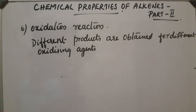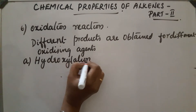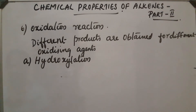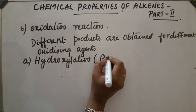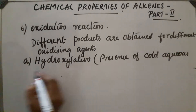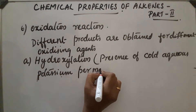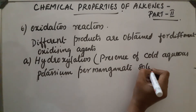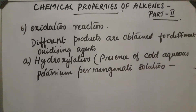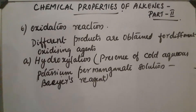The first oxidation reaction is hydroxylation. Hydroxylation takes place in the presence of water and oxygen. This reaction takes place in the presence of cold aqueous potassium permanganate solution, KMnO₄. This is also called Bayer's reagent.